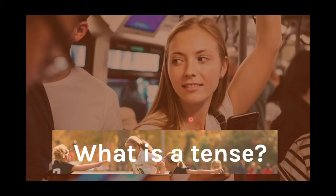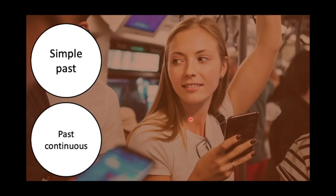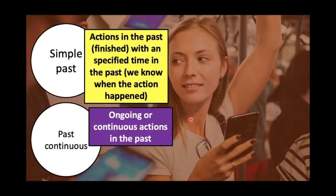Let's remember what a tense is. Tenses are grammar structures we can identify in sentences to know exactly when actions happened. In this case, we're going to learn about the simple past and the past continuous. We use the simple past to describe actions that happened in the past that have a specified time — so we know exactly when the action happened.